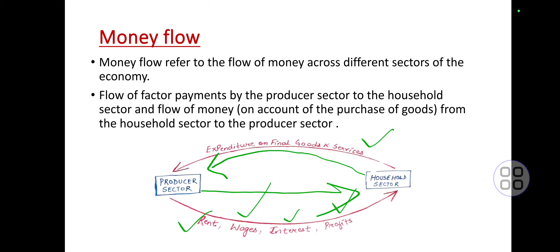Households spend on final goods and services — that is their expenditure on final goods and services. Here the flow involves money, and monetary transactions take place. When monetary transactions occur, this is known as money flow.